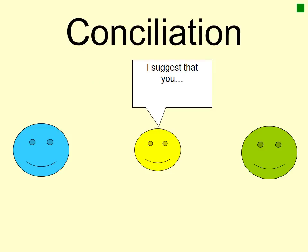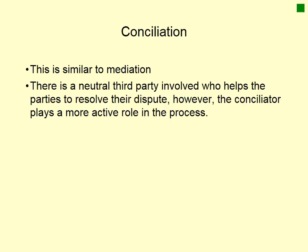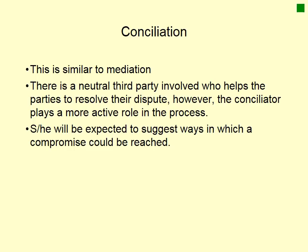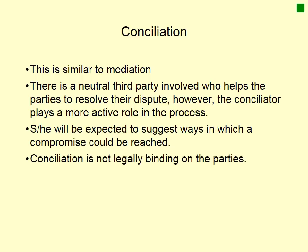Conciliation is very similar to mediation, but the difference is that the neutral third party actively makes suggestions as to how to solve the dispute. The conciliator plays a more active part in the process and will suggest ways that a compromise could be reached. Again, it's not legally binding on the parties, so even if they do come to a decision they don't have to stick with what they've agreed.